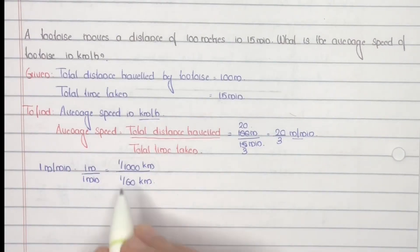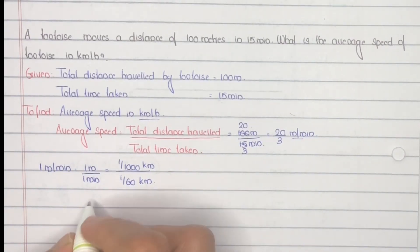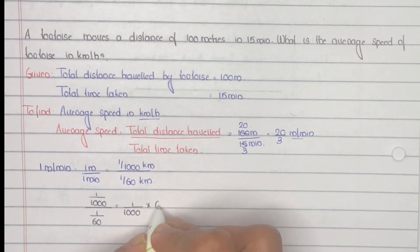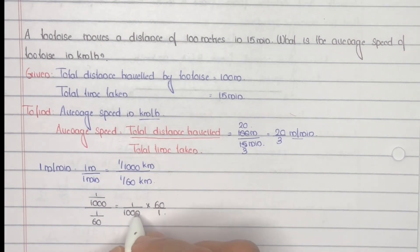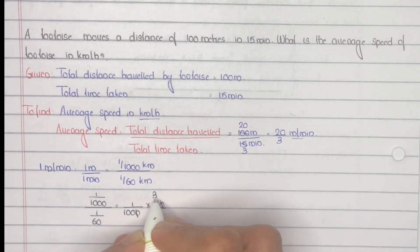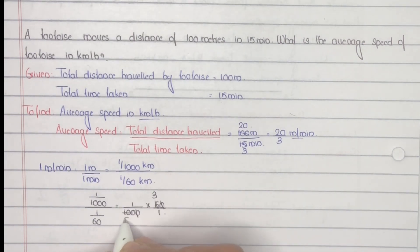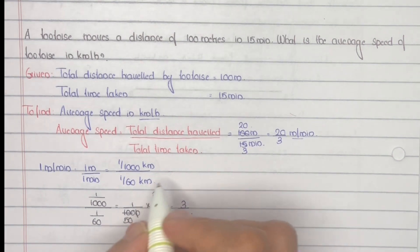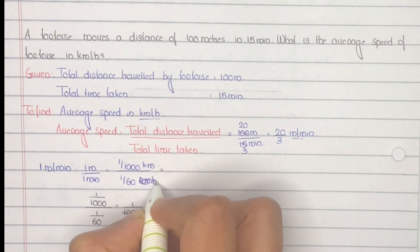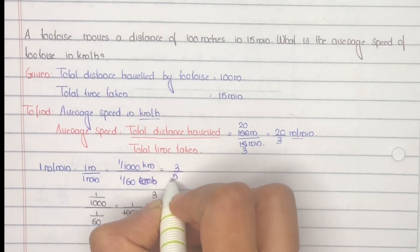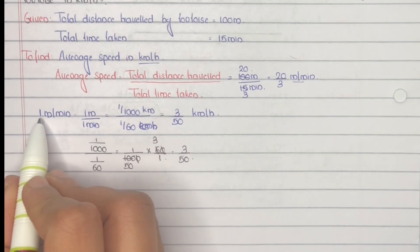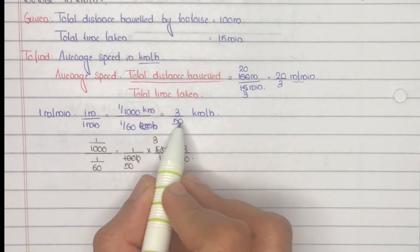Now solve this: that is (1/1000) divided by (1/60), which equals 1/1000 multiplied by 60/1. Cancel the common terms — 2 is common: 6 by 2 is 3, and 100 by 2 is 50. This equals 3 by 50 kilometers per hour. So 1 meter per minute equals 3/50 kilometers per hour.